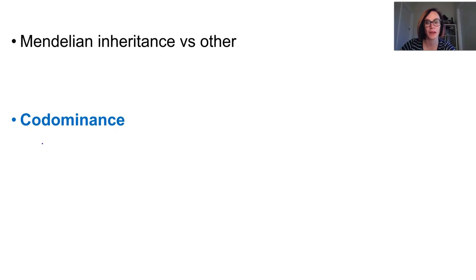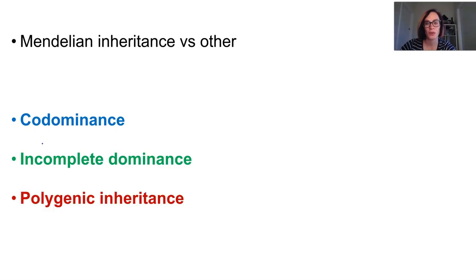Mendelian inheritance was built on ideas that were pretty straightforward. They're talking single genes on autosomal chromosomes, which are in charge of just one trait, and the outcomes are either dominant or recessive phenotypes. But not all inheritance works in this manner or is this straightforward. We're going to talk about three others: codominance, incomplete dominance, and polygenic inheritance.